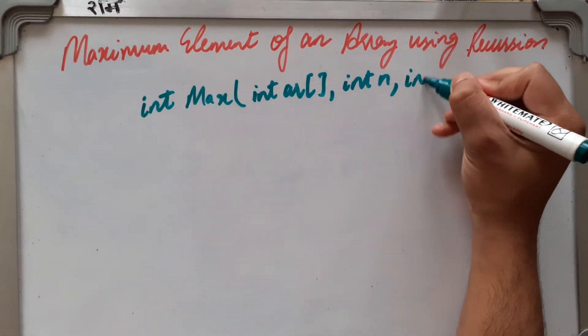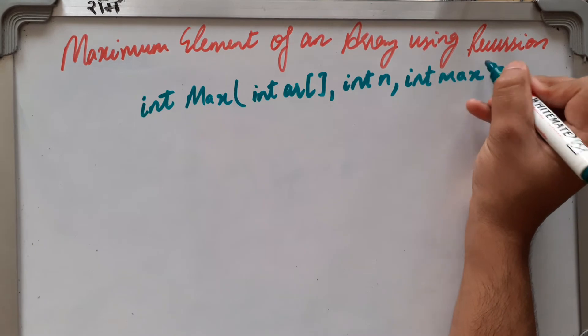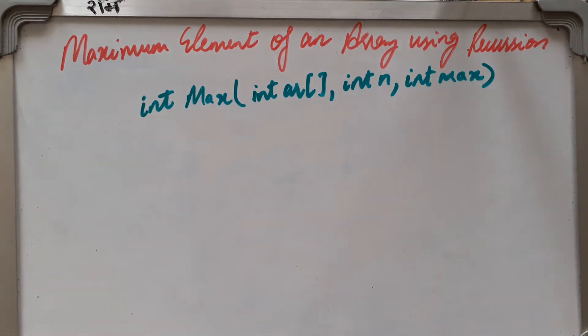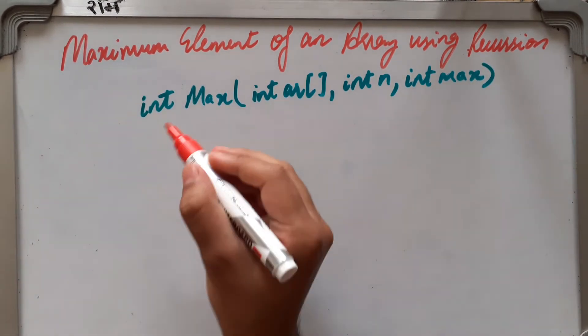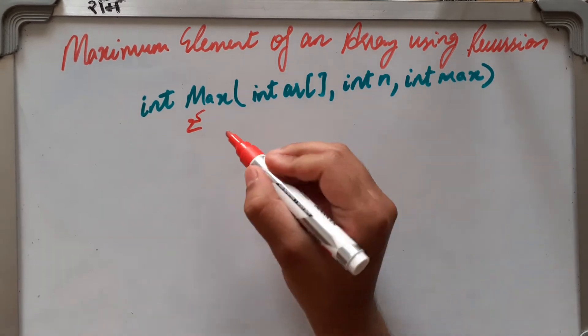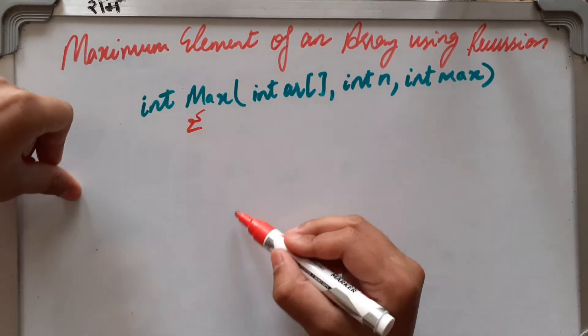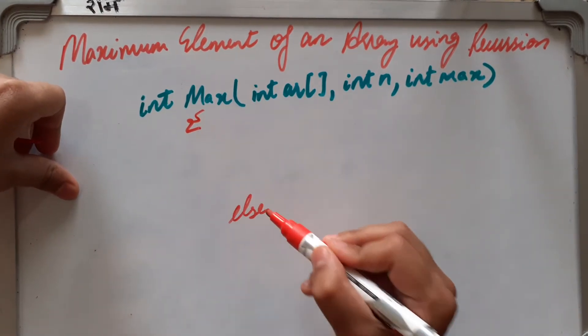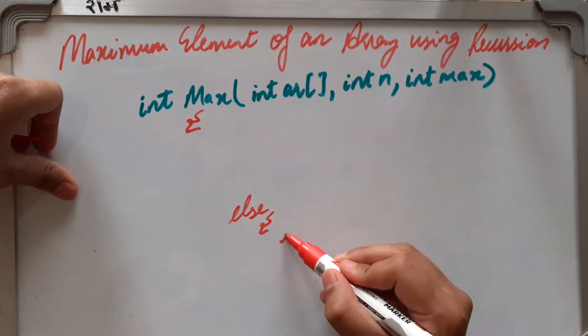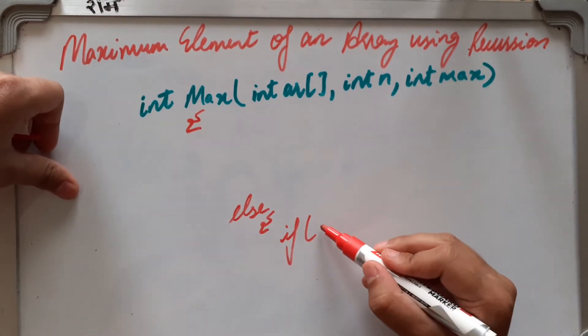And we are having a maximum variable which we have to return. Now we have a condition, we have to have a condition in which our recursion has a failure condition. We will write else part later, where we will find out the maximum.